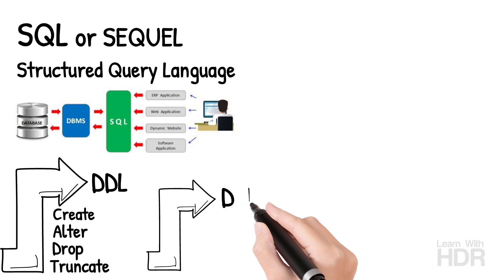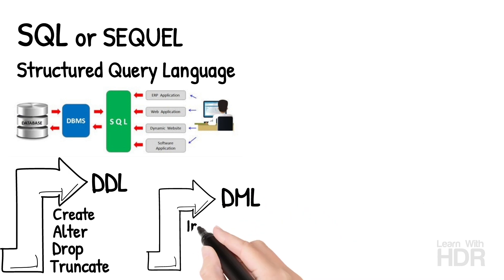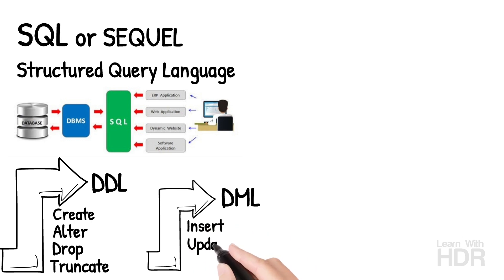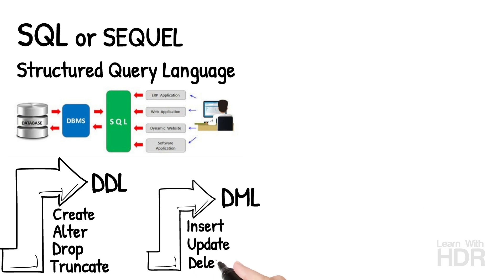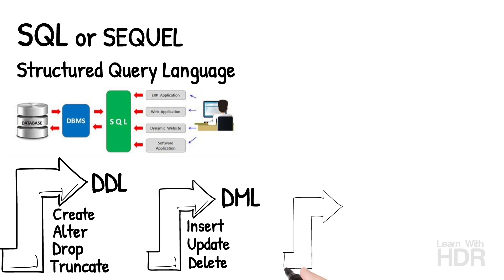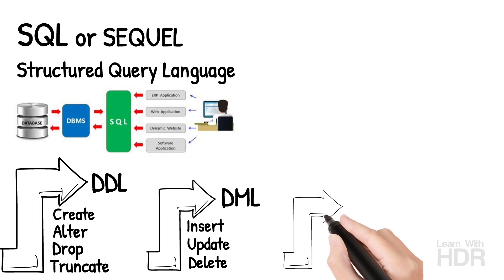DML stands for Data Manipulation Language. It includes the Insert command — you can insert data into the database. Next is Update — you can update existing data in the database.